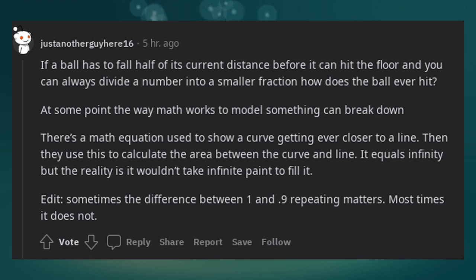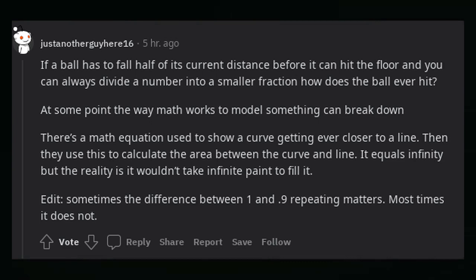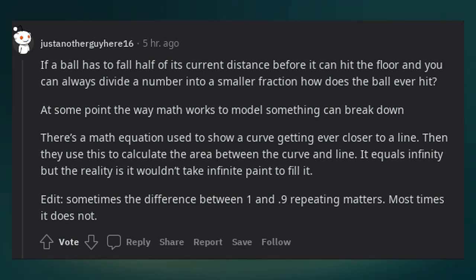If a ball has to fall half of its current distance before it can hit the floor and you can always divide a number into a smaller fraction, how does the ball ever hit? At some point the way math works to model something can break down.